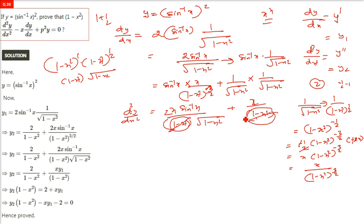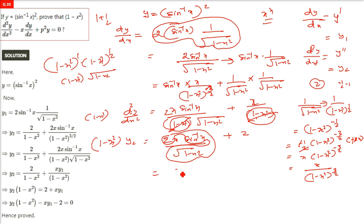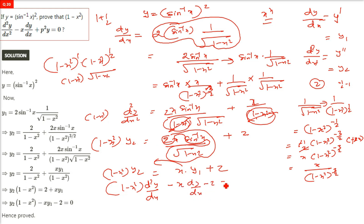Taking (1 minus x²) to the left: (1 minus x²)·d²y/dx² gives the first part. The second term, 2x·sin⁻¹x/√(1 minus x²), is nothing but x·dy/dx since dy/dx = 2·sin⁻¹x/√(1 minus x²). The constant 2 remains. So (1 minus x²)·d²y/dx² = x·dy/dx + 2, which rearranges to (1 minus x²)·d²y/dx² minus x·dy/dx minus 2 = 0. Hence proved.